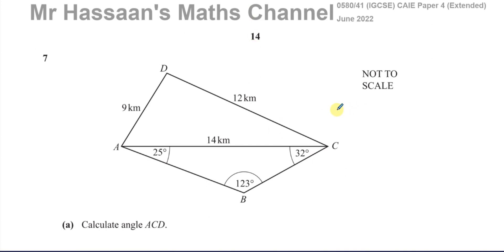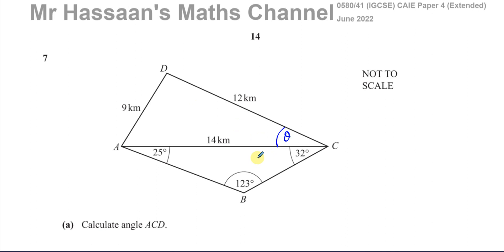So here we have a question where we're given a quadrilateral, which is split up into two triangles joined together. We're asked to calculate the angle ACD — which is the angle over here — and I'm going to call it theta for now. This angle is part of triangle ACD, and we know all three lengths in this triangle.